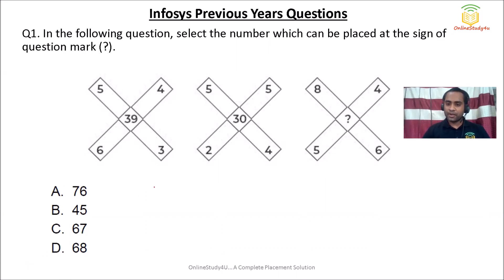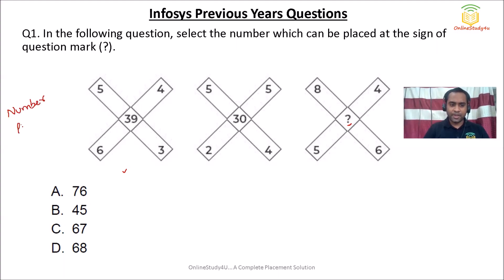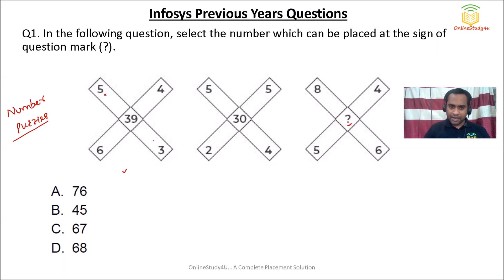In question number one, we need to find out the missing values. This is a number puzzles question. You need to find out the pattern. What they have done is multiplied the diagonal numbers: 5 × 3 = 15, and then 6 × 4 = 24, so 15 + 24 = 39.